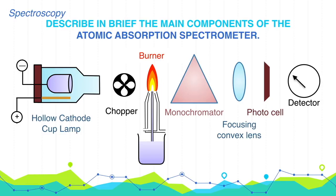6. Readout Meter. This dial gives us the amount of radiation absorbed by the unexcited atoms present in the ground state, expressed in terms of absorbance.